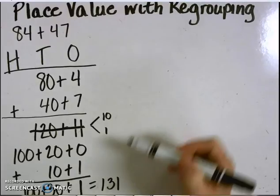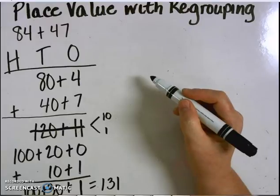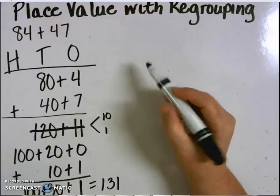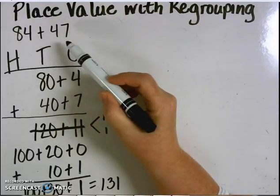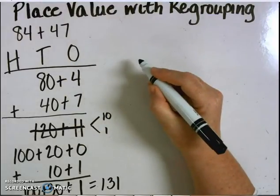The next way I can show is through pictorial representation or pictorial models. The picture model I'm going to use for 84 plus 47 are the base 10 blocks. The number 84 has eight 10s.